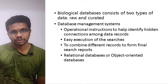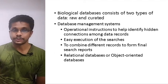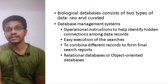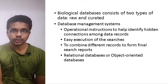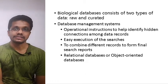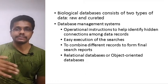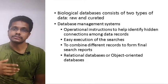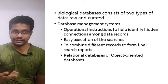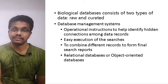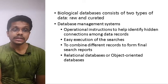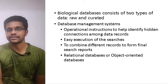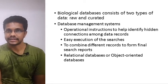Based on their type, biological databases can be of two kinds: raw and curated. Raw biological databases contain raw data directly from experiments. In curated databases, the data has undergone curation — either computer-mediated or manually curated — to make the data more valid and authentic. All of these databases have a database management system, which controls all data and helps us retrieve biological data when and where it is needed.